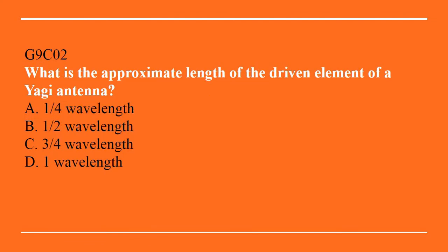G9C02: What is the approximate length of the driven element of a Yagi antenna? A. Quarter wavelength. B. Half wavelength. C. Three-quarter wavelength. Or D. One wavelength. The answer is B, half wavelength.